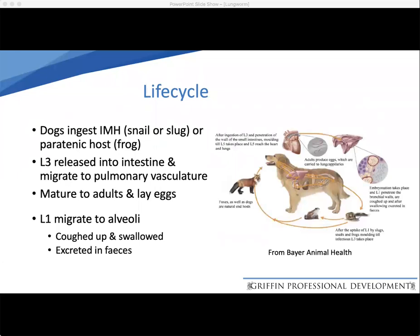Here on your screen you can see a pictorial representation of the life cycle of Angiostrongylus vasorum. We can see the dog in the center, and the snails and slugs which ingest the L1. The L1 progresses through to L3, and the L3 is then ingested by the dog, where it matures to adulthood in the lungs. The cycle continues as the dog sheds eggs which are eaten again by the slugs or snails in the faeces. The L3 are released after ingestion of the slug or snail into the intestine, then migrate to the pulmonary vasculature, mature to adults, and lay eggs. The larvae then move up the trachea to the mouth, are coughed up and swallowed, passed in faeces, and ingested by snails and slugs, and the cycle continues.